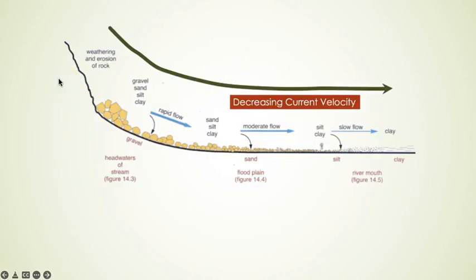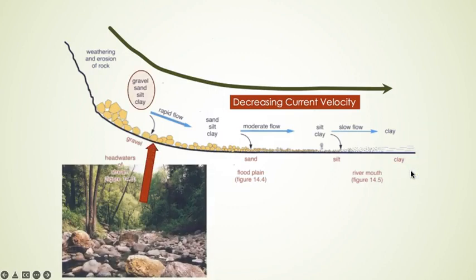When considering the origin of detrital sedimentary rocks, it is helpful to think of streams, because streams are the principal erosional agent. This illustration represents the profile of a typical stream, from where it begins at its source in the mountains to where it ends in the sea. Along this profile, we can visualize the location of depositional environments for sediment of varying textures.